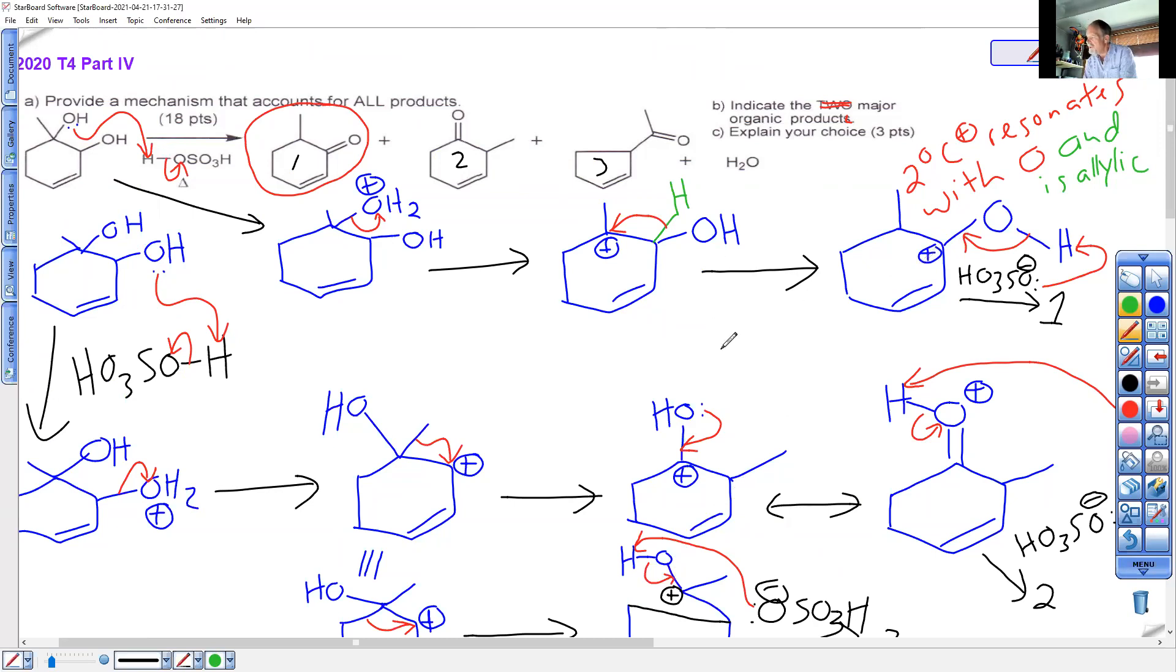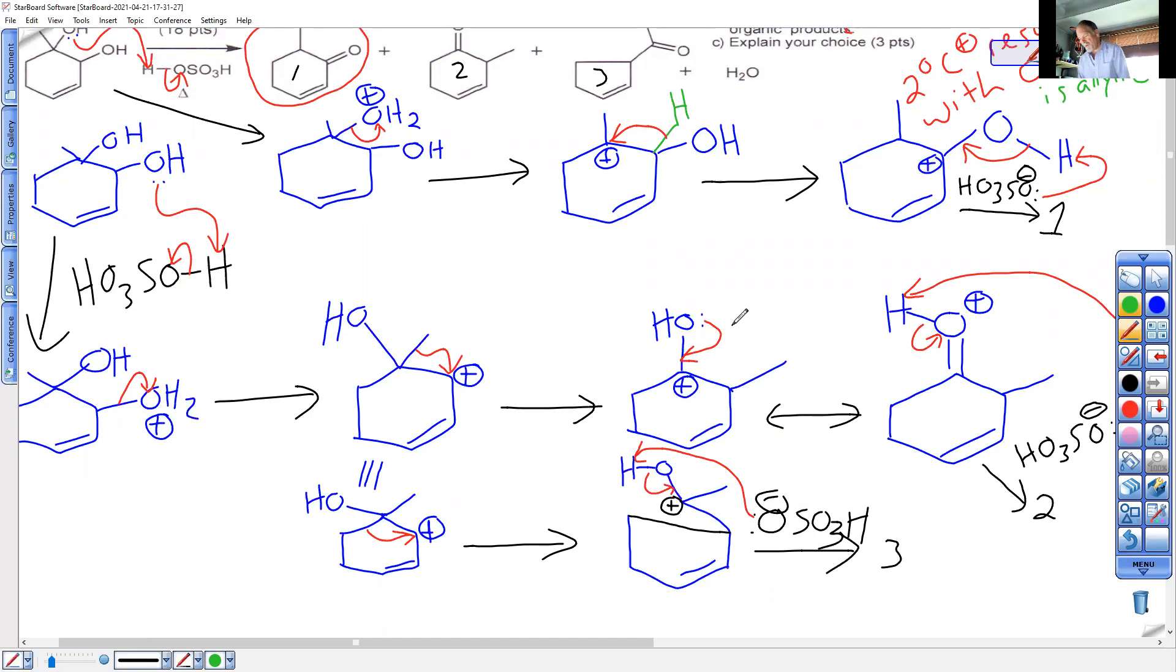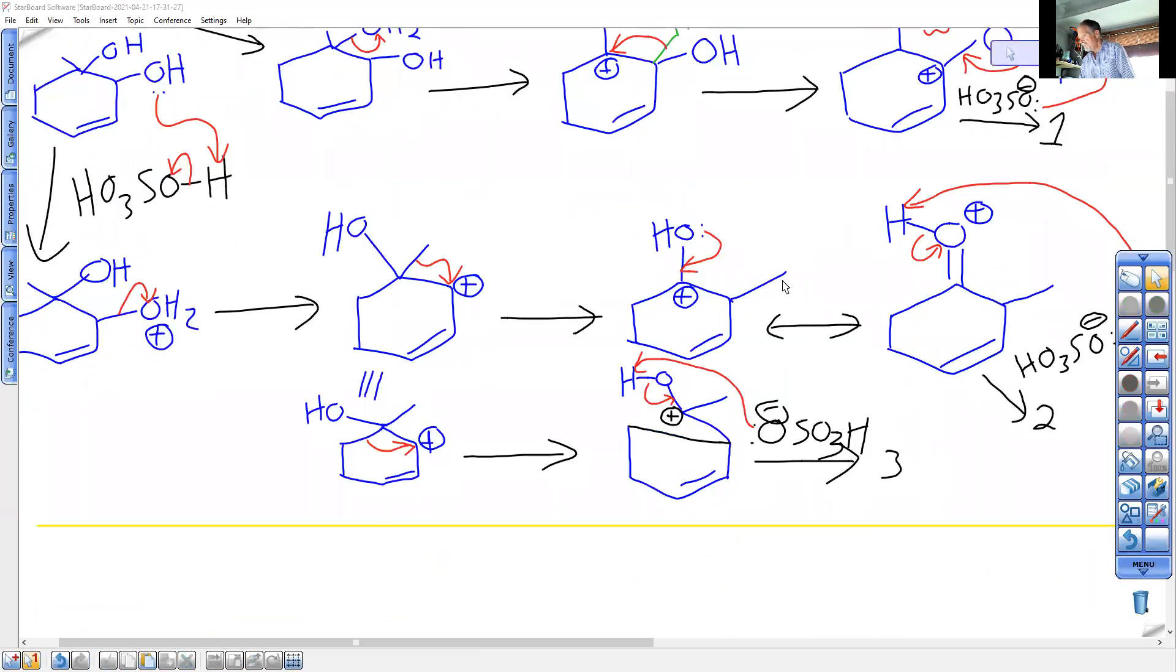And I'm going to finish off by looking at the possible fourth product that wasn't on this test. So I'll put a yellow line down here. Because it could be on a future test. You never know. And let's just copy this cation here. I also could have moved instead of the CH bond, the CC bond. Make sure that arrow reaches your carbon.